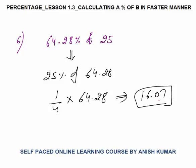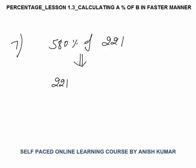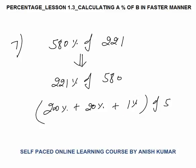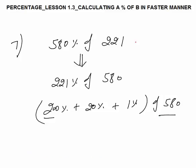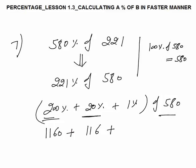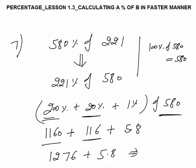Next is 580 percent of 221. Better to calculate 221 percent of 580, which is easy. That is 200 percent plus 20 percent plus 1 percent of 580. 200 percent would be double: 100 percent of 580 is 580, so 200 percent would be 580 into 2 — 58 into 2 would be 116, so this will be 1160. Now 10 percent of 580 would be 58, so 20 percent would be 116. 1 percent would be 5.8. Now 1160 plus 116: 1160 plus 100 would be 1260, plus 16 is 1276, plus 5.8 is 1281.8. That would be your final answer.